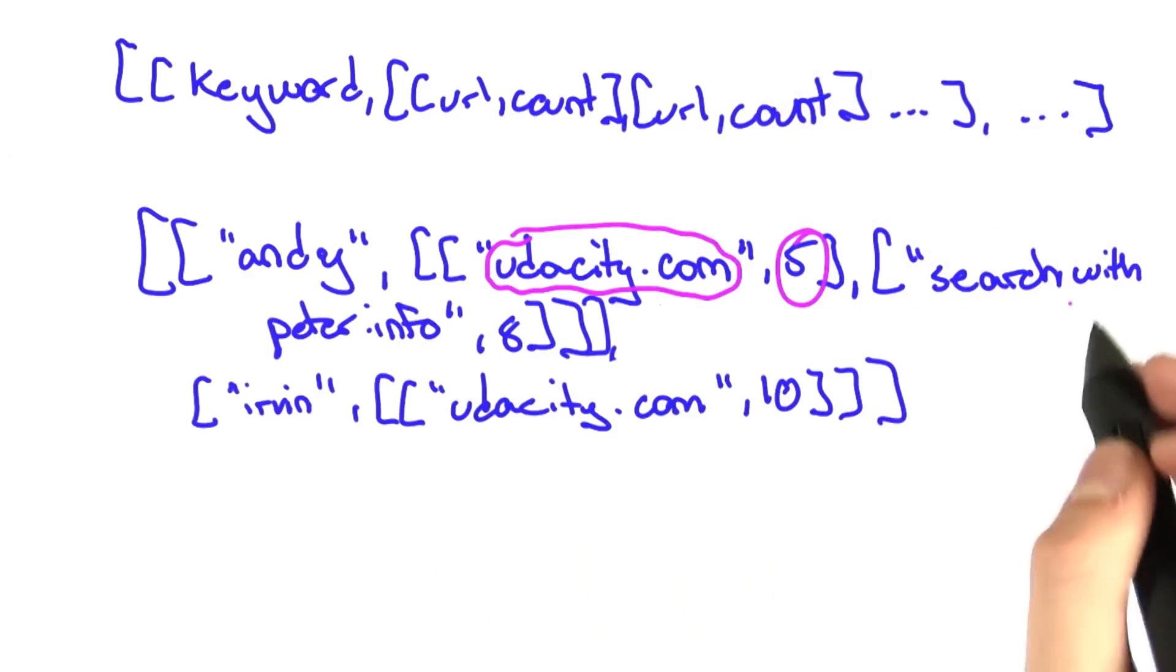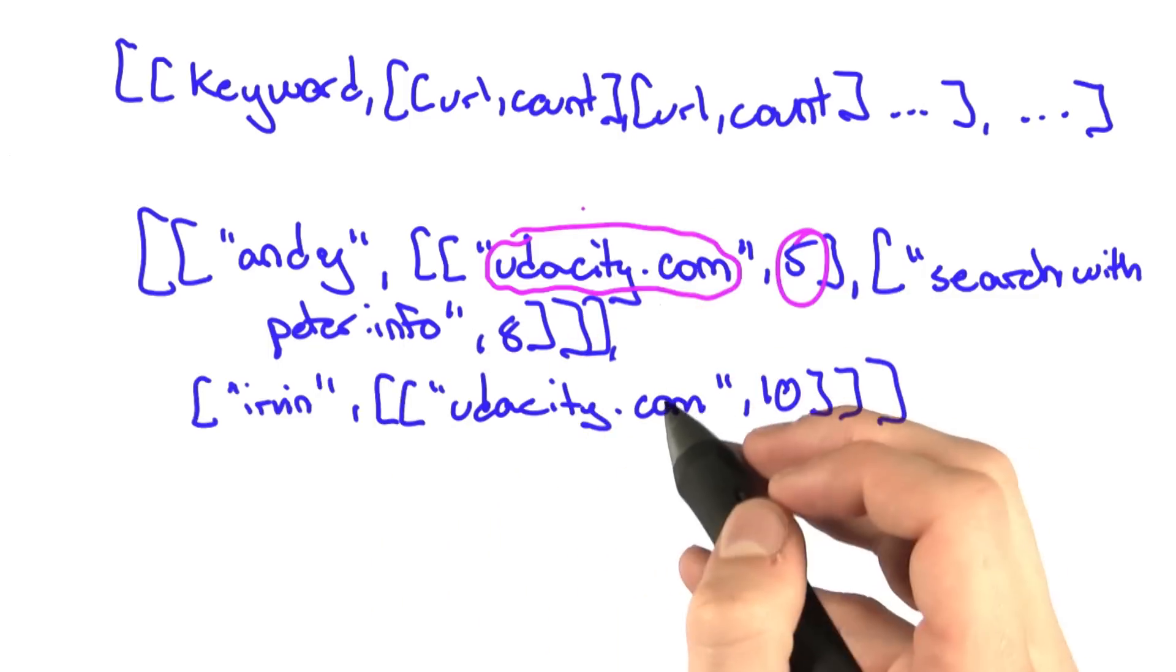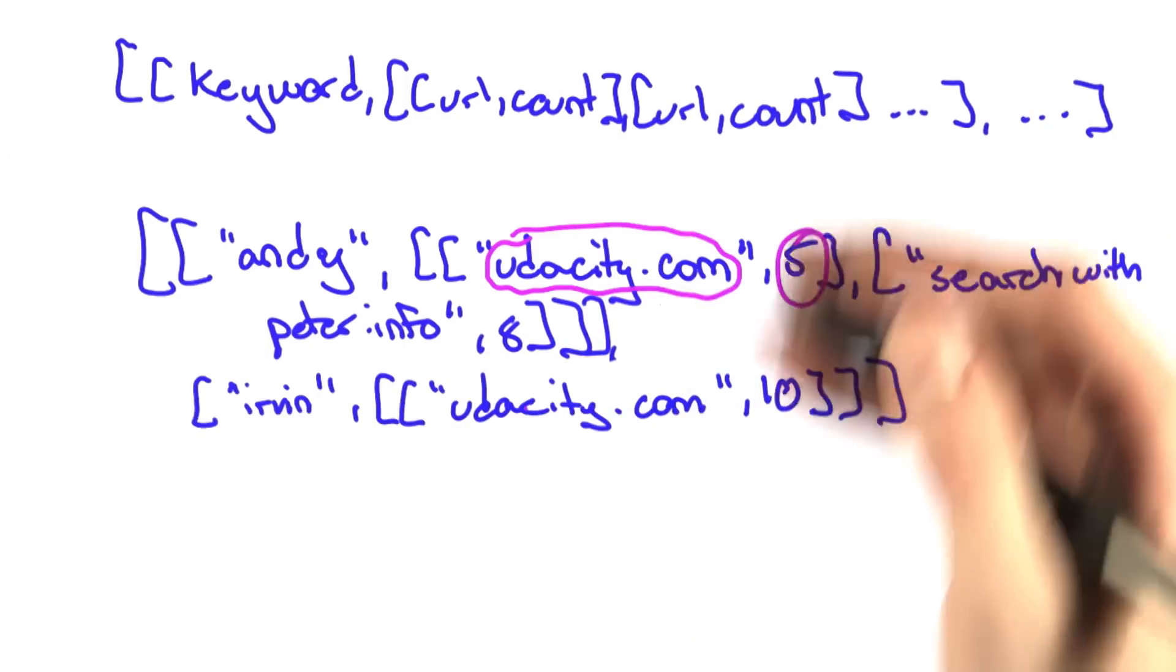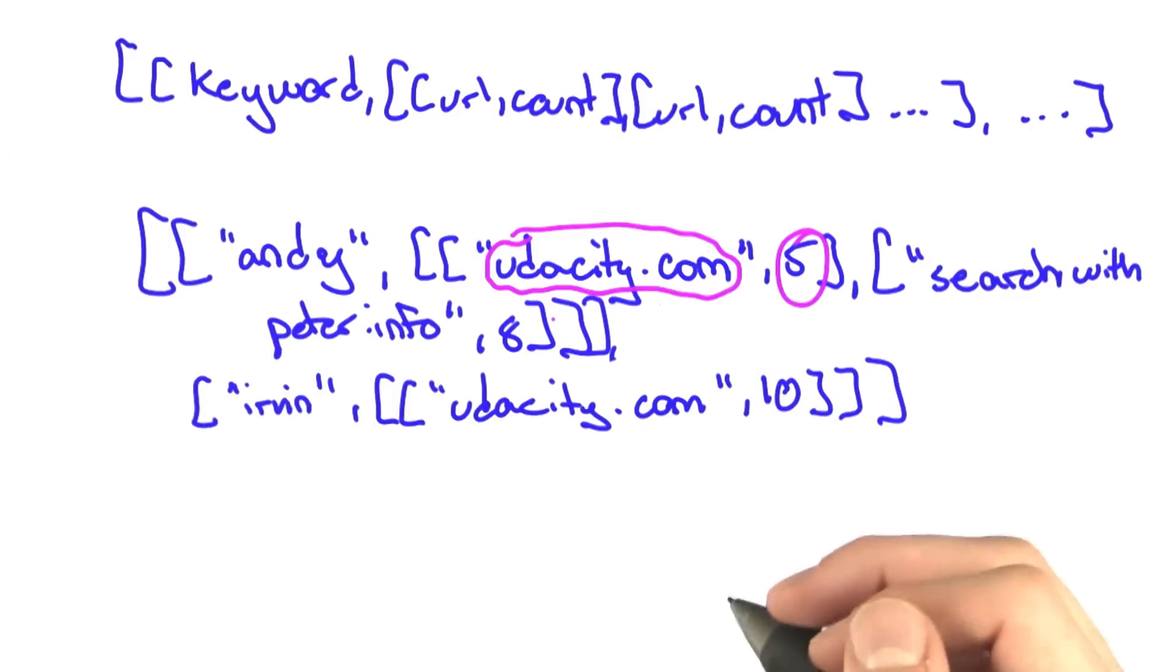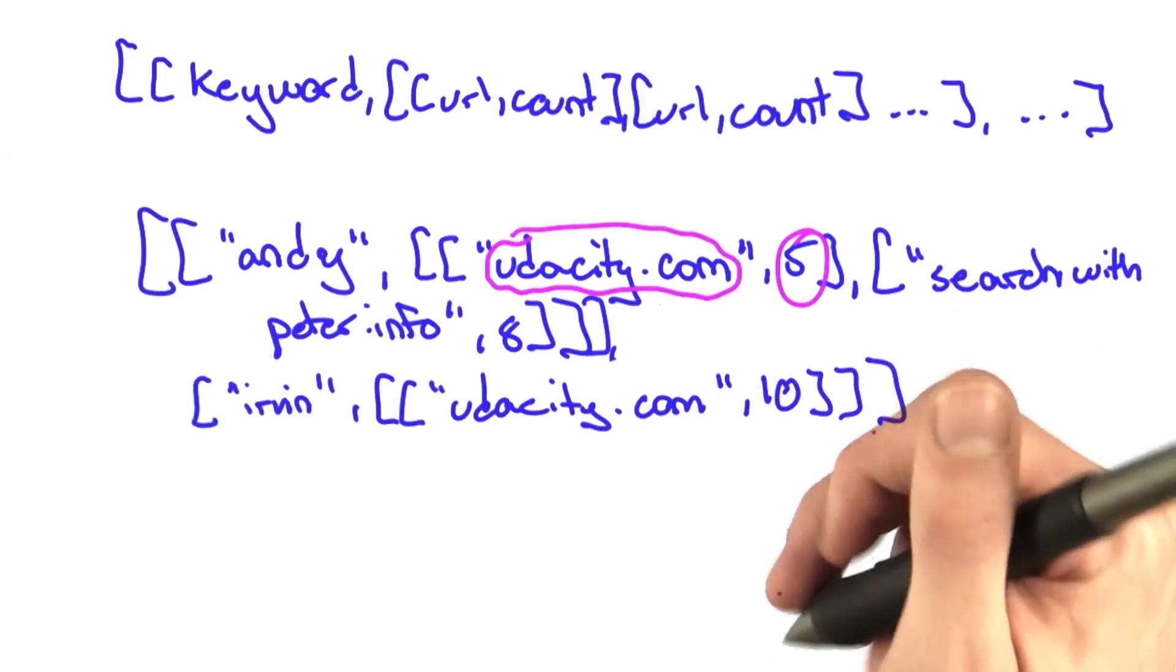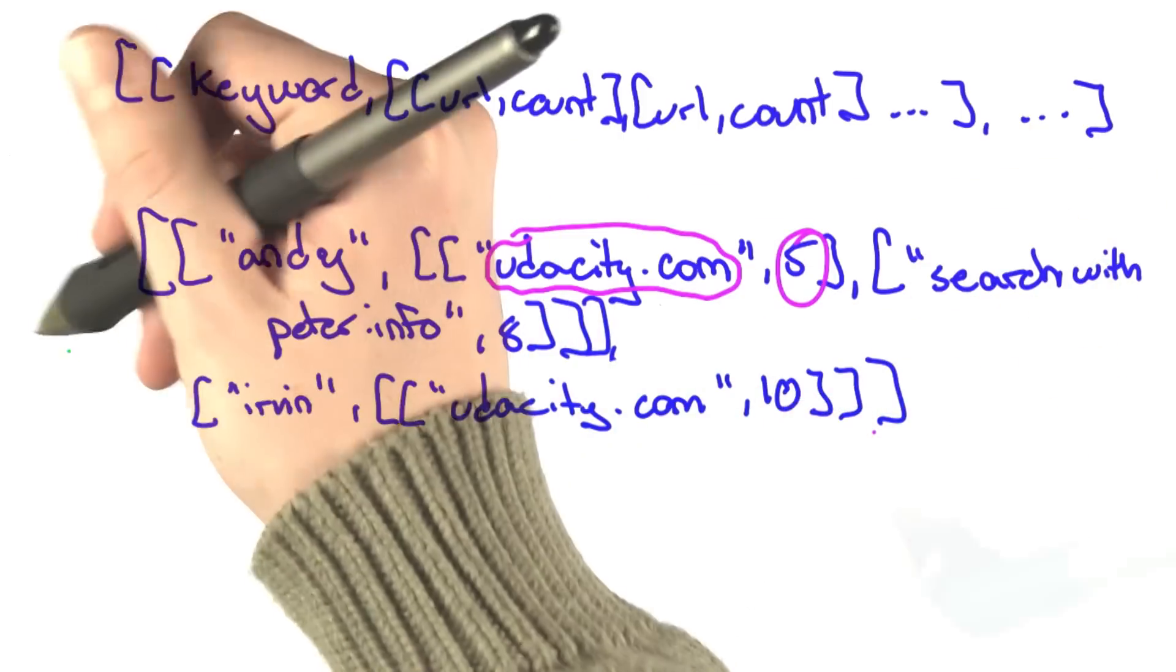We can add searchwithpeter.info above udacity.com when we display results on the webpage because users more often click that link than the other. This seems like a pretty good choice, and it turns out to be the best one. So it gets a check.